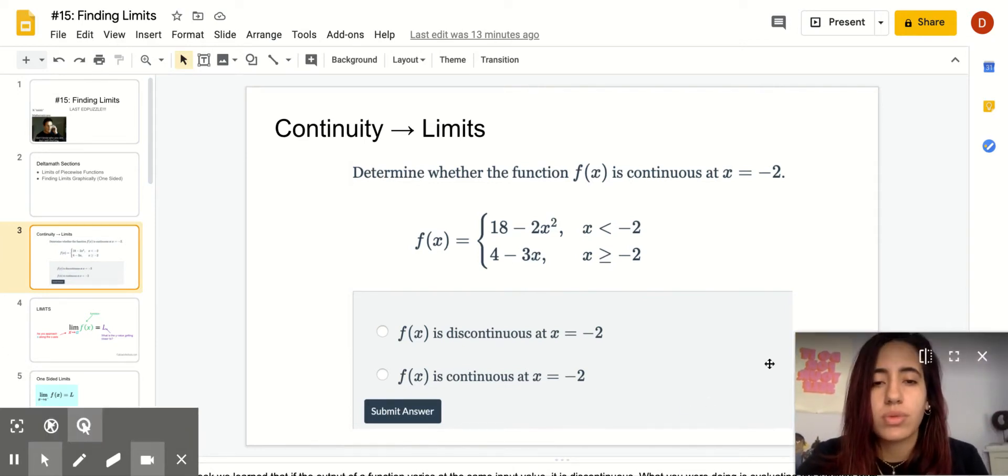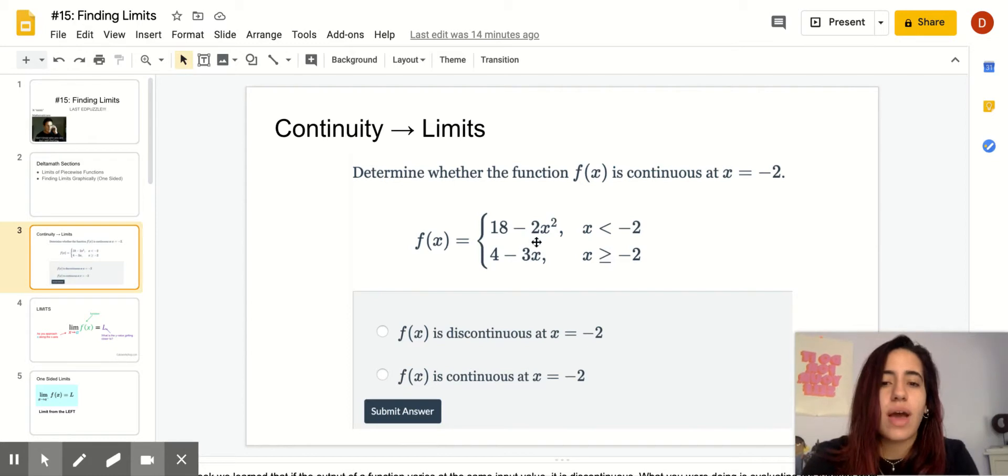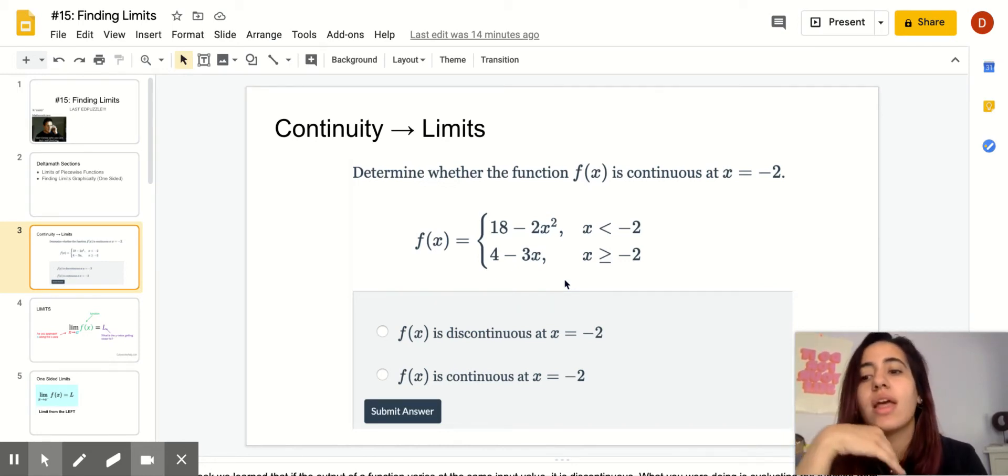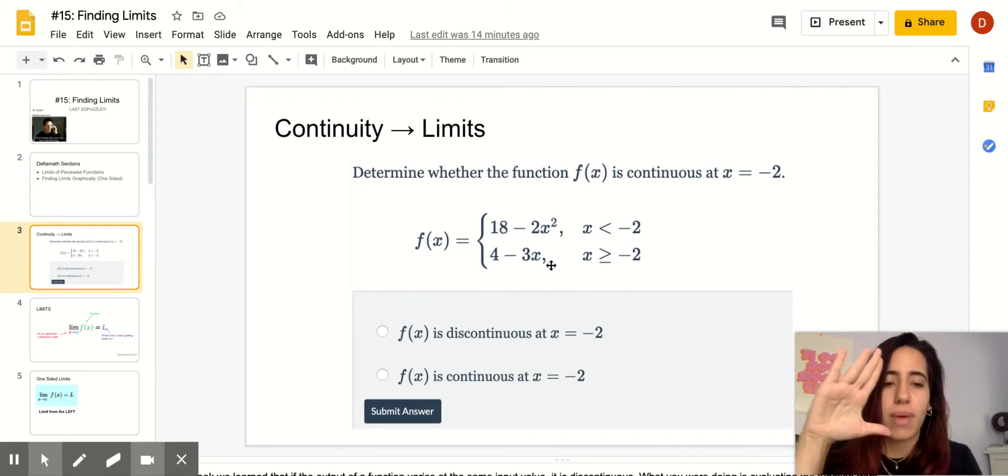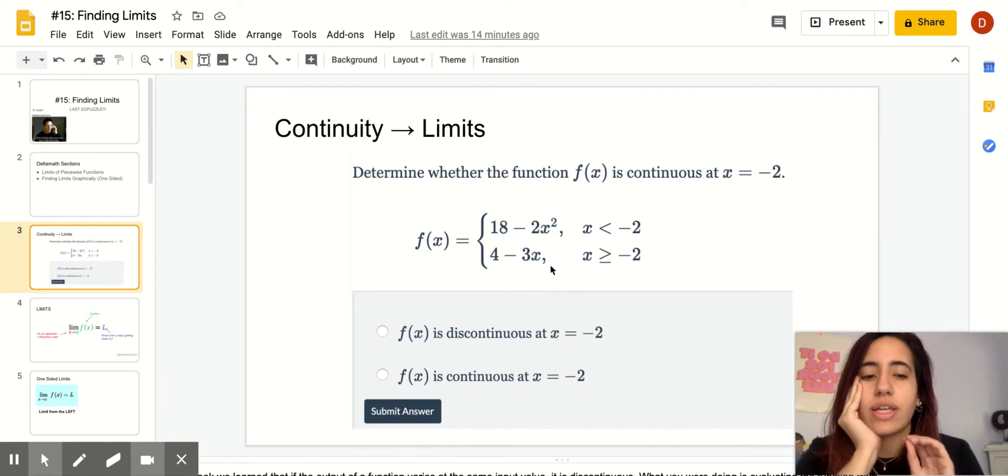So this is an example of a problem you got under the continuity section last week. You had those on Tuesday's assignment and Thursday's assignment. So you were given a piecewise function and you had to decide whether it was continuous or not. If it was continuous then that meant that on both sides the y was approaching or the output was approaching the same value, and if it was discontinuous then it was approaching different values meaning those graphs didn't meet up at the same y point. They had different y values that they were approaching. This time you are looking at the same format of piecewise functions but you are not looking at it in terms of continuity. We're calling it limits now.